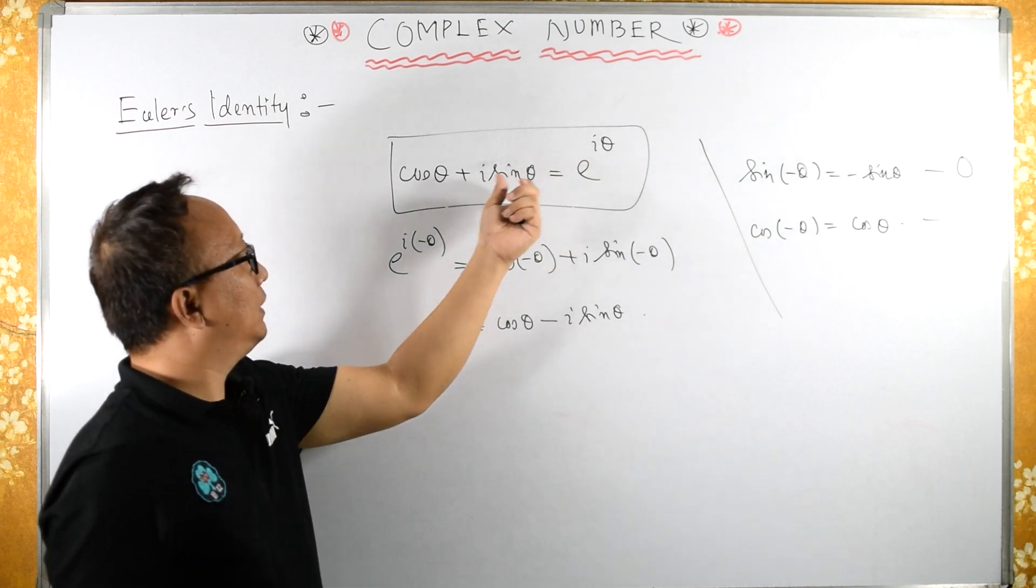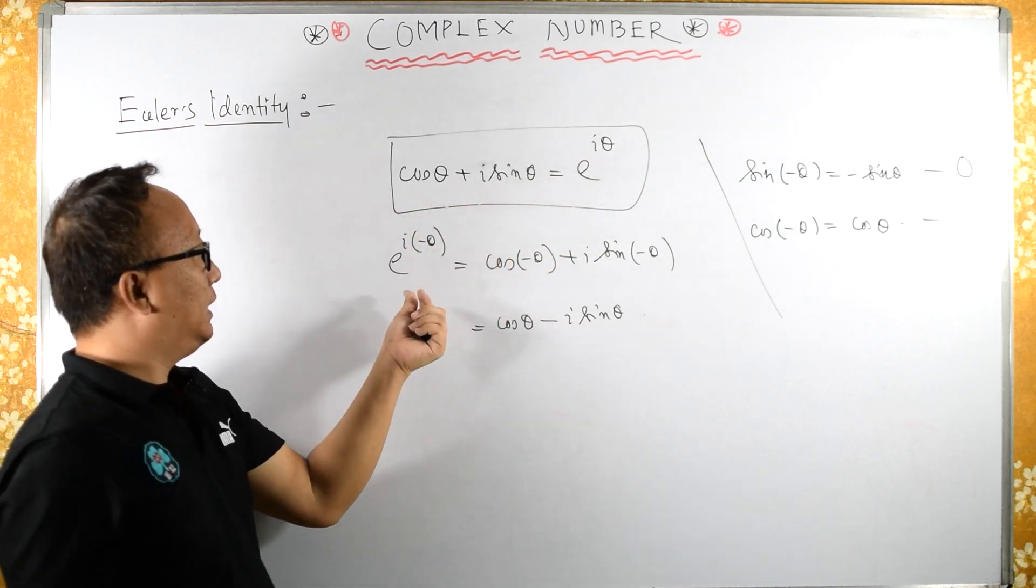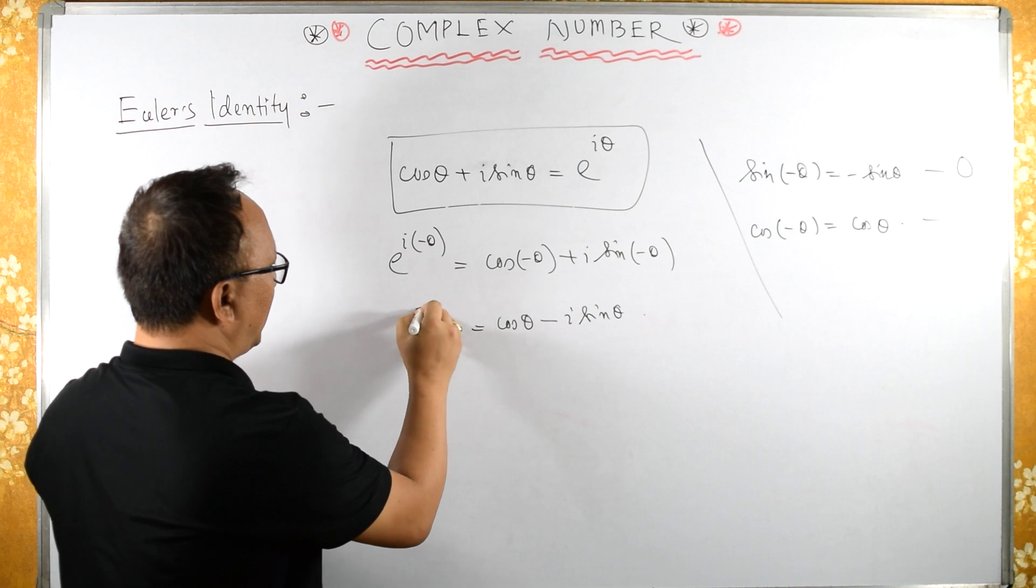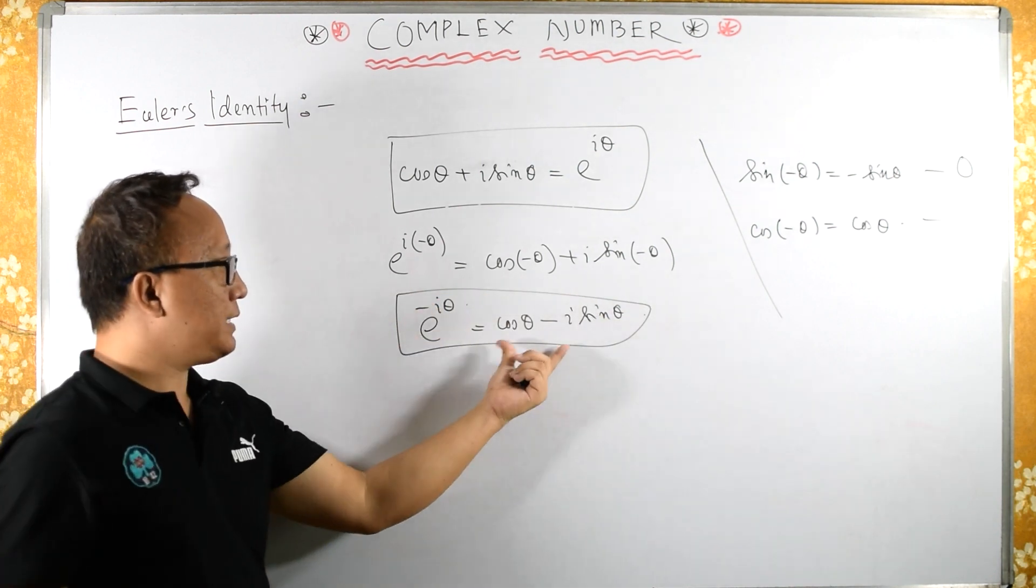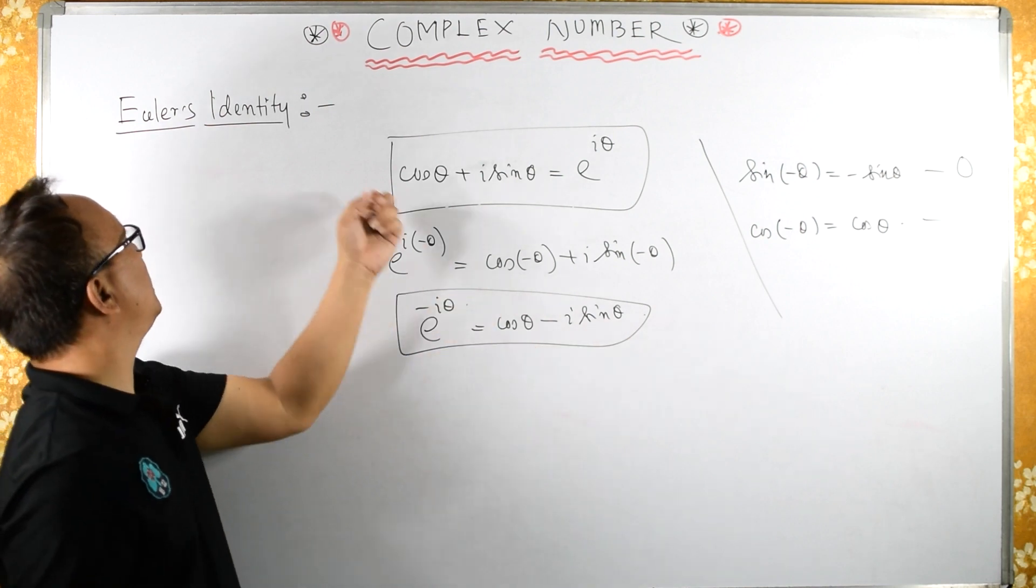E raised to i theta equals cos theta plus i sin theta. E raised to minus i theta is the same as cos theta minus i sin theta. This is Euler's identity.